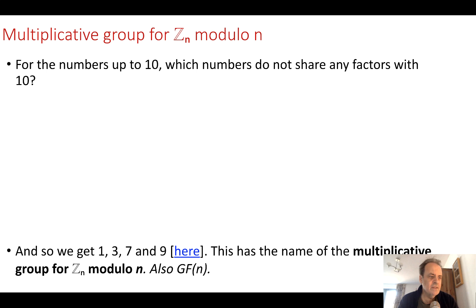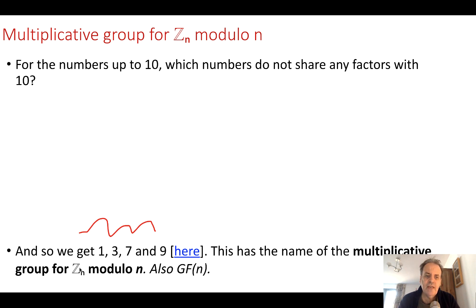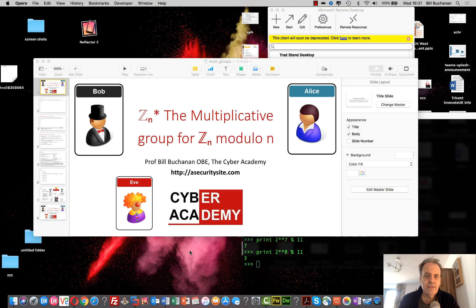1, 3, 7, and 9 — this is defined as the multiplicative group of Zn* modulo n, also called the Galois field of n. Zn represents integers up to n, and we take them modulo n.